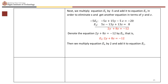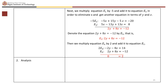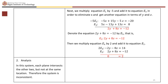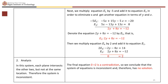Multiply e sub 4 by 2 to get minus 2y minus 8z equals negative 14. Wait — since e sub 4 gives minus y minus 4z equals 7, twice e sub 4 is minus 2y minus 8z equals 14. Wait — the transcript states minus 2y minus 8z equals 40. Adding e sub 5 (2y plus 8z equals negative 12) gives 0 equals 2, which is a contradiction. Therefore, the system is inconsistent and has no solution.